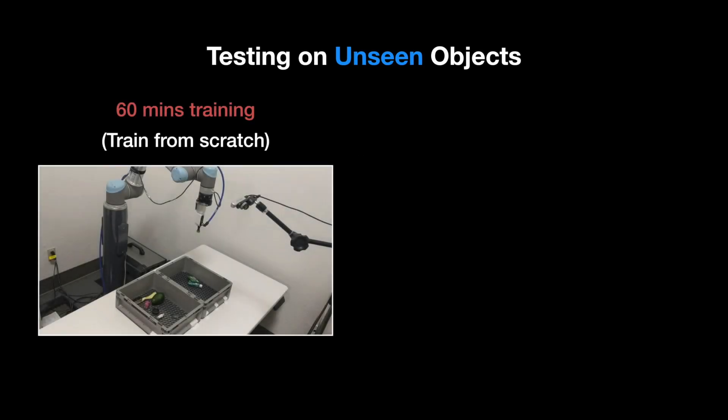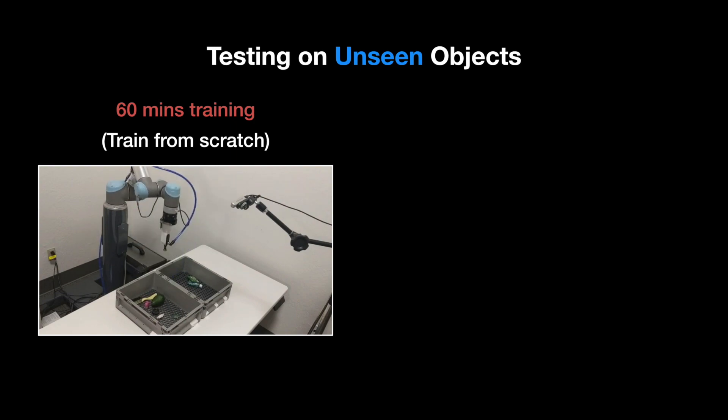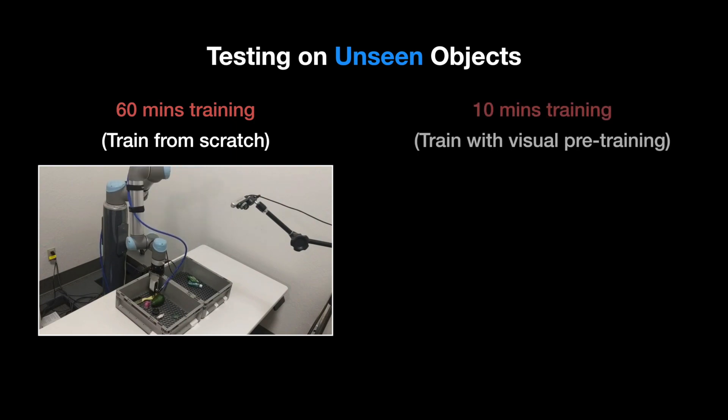It takes a long time for real-world robots to learn a manipulation skill from scratch. Even worse, the learned skill often fails to generalize to unseen objects.